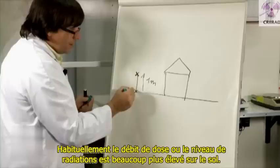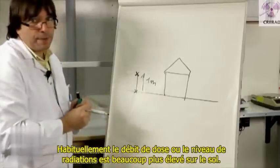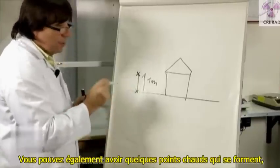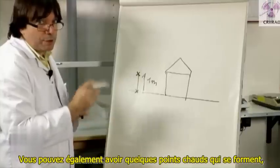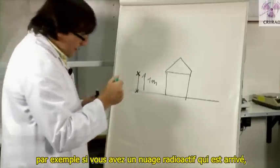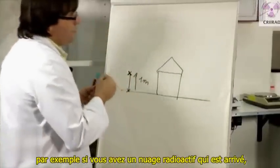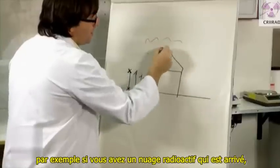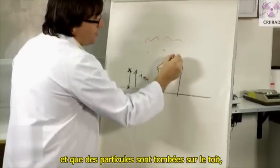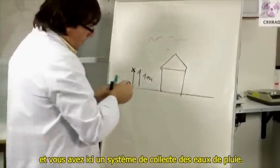Usually, the dose rate or the degree of radiation is much more elevated on the ground. You also have some hot spots that can occur. For example, if you have a radioactive cloud arriving and particles have been falling on the roof.